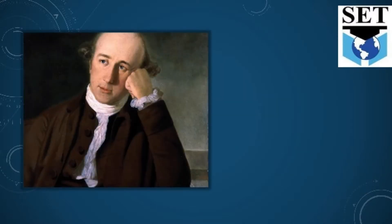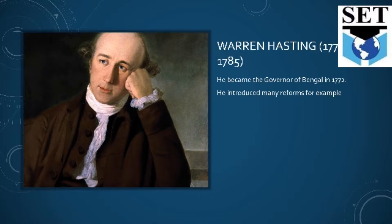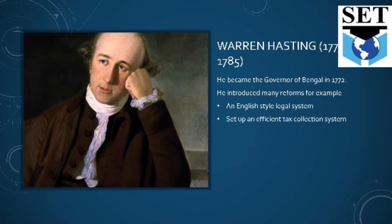The first man is Warren Hastings. He was born in 1732 and died in 1818. He is called the Founder of British India and played a very important role in the British presence there. He became the Governor of Bengal in 1772. He introduced a British-style system in India, including an English-style legal system, an efficient tax collection system, and he established the Supreme Court of Judicature at Fort William.